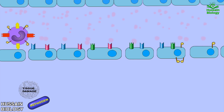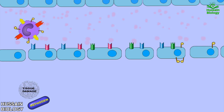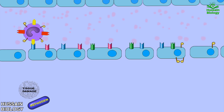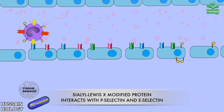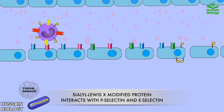From here, rolling adhesion begins. The leukocyte rolls on the endothelial membrane and tries to make contact with endothelial cells. During rolling adhesion, the Sialyl Lewis-X modified protein of the leukocyte interacts and binds with P-selectin. This Sialyl Lewis-X modified protein can also interact and bind with E-selectin.